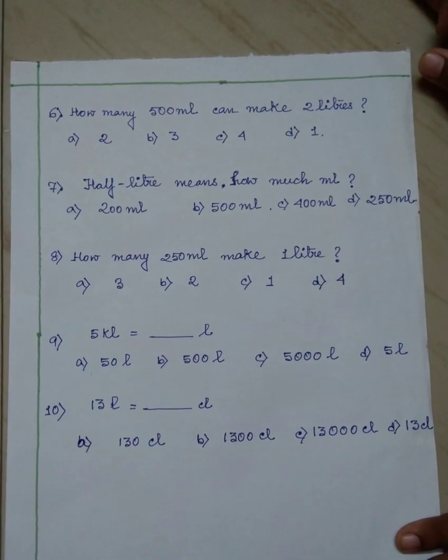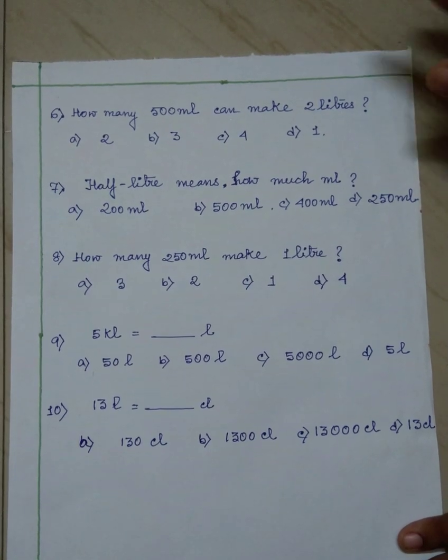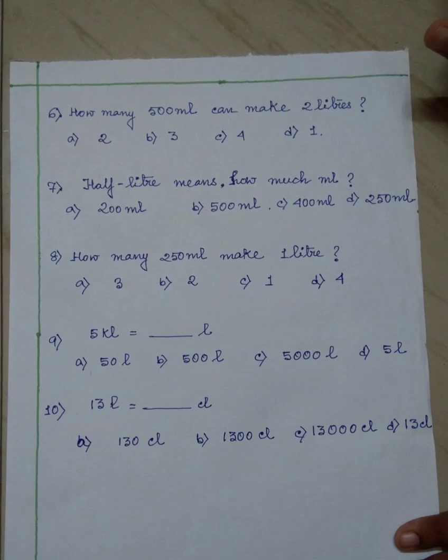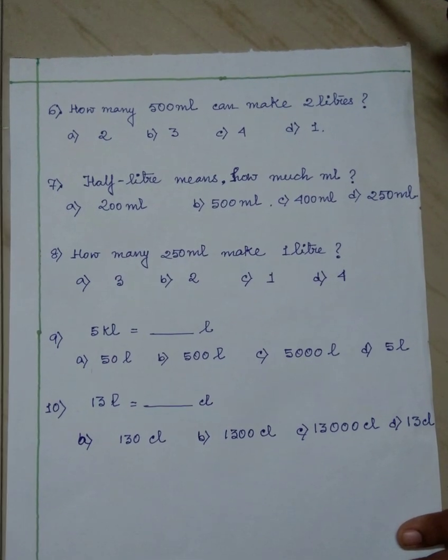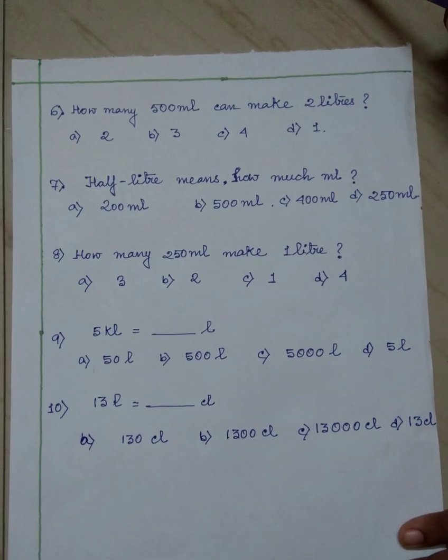Seventh number question is, half litre means how much millilitre? Options are 200 millilitre, 500 millilitre, 400 millilitre, 250 millilitre.